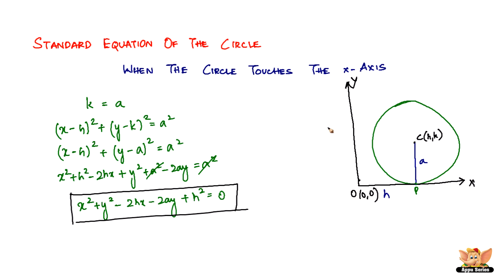Mainly what happens is that k becomes equal to a. So wherever you find k in the standard equation, replace it by a and you end up with this equation. x square plus y square minus 2hx minus 2ay plus h square equal to 0.